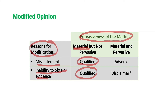In short, a qualified opinion is issued by the auditor under two circumstances: one, there is a misstatement on the financial statements and the effect of the misstatement is material but not pervasive; or two, the auditor was unable to obtain sufficient and appropriate audit evidence and the effect of that inability is material but not pervasive.